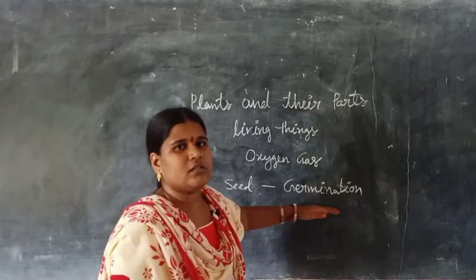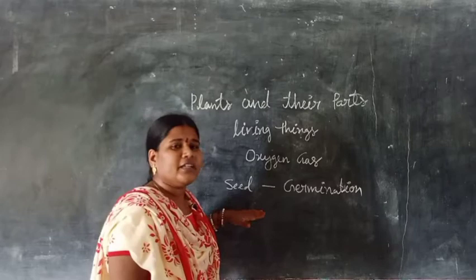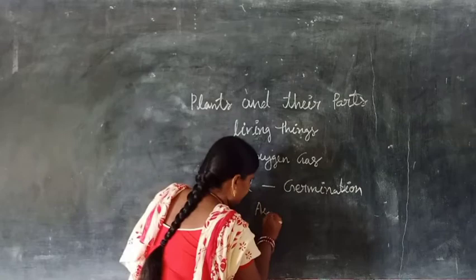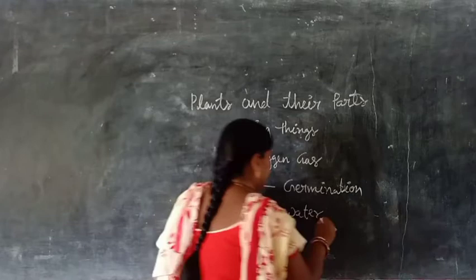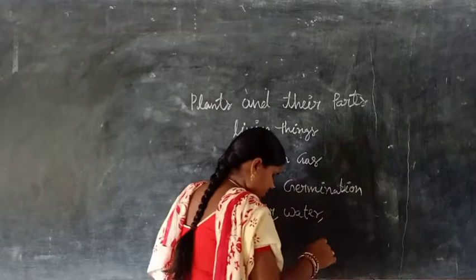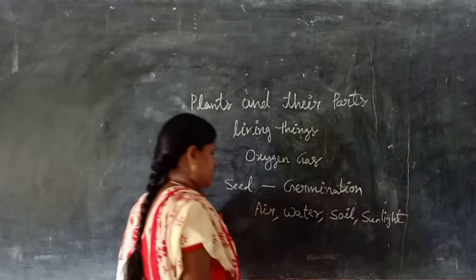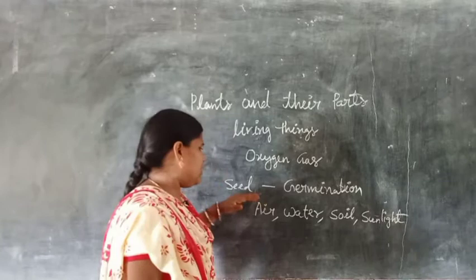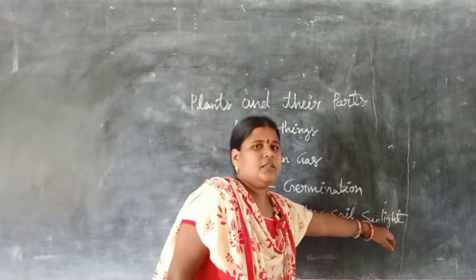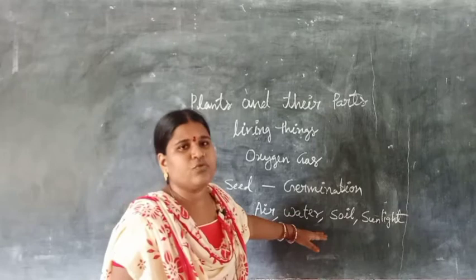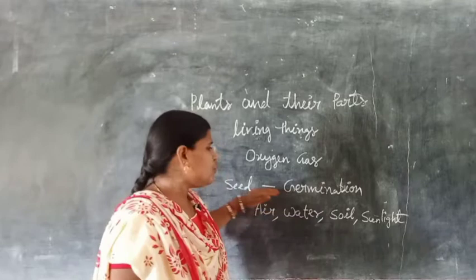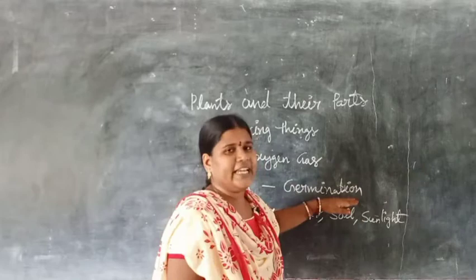So what is germination? Germination means the process by which a seed grows into a plant — after some time, a seed becomes a plant. This process is called germination. Now, what do plants need to grow? Plants need air, water, soil, and sunlight. These four things are very important to grow a seed into a plant, and this process is called germination.